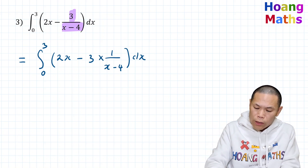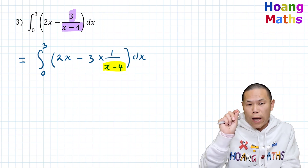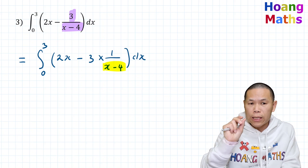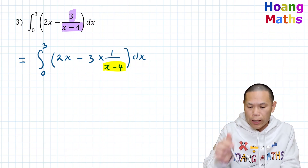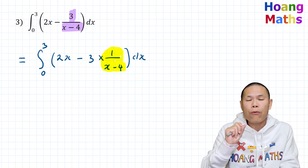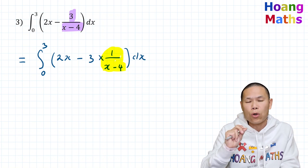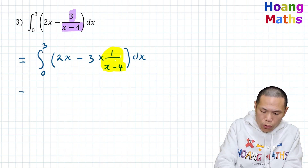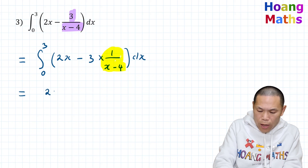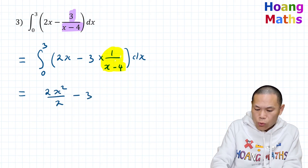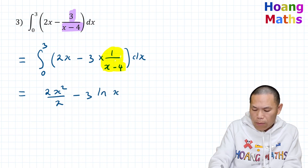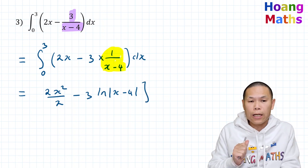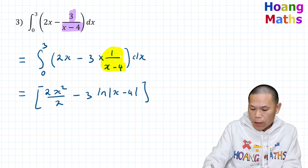If we differentiate x minus 4, it gives 1. So 1 is the numerator, meaning that is f'(x) over f(x). Therefore integrating this function gives ln|f(x)|, where f(x) is x minus 4. So the answer is 2x squared over 2 minus 3 ln|x minus 4|, simplified to x squared minus 3 ln|x minus 4|, evaluated from 0 to 3. We use absolute value just in case it's negative, because we cannot take log of a negative number.